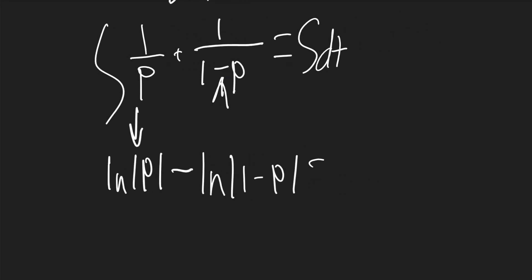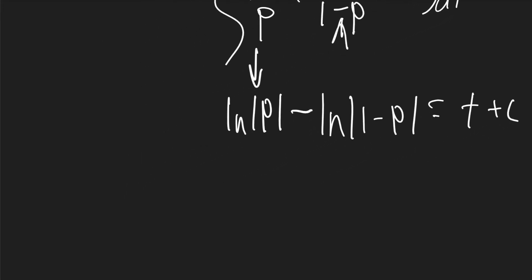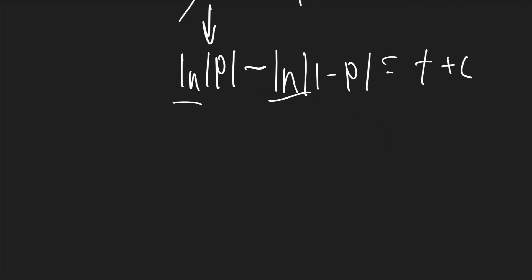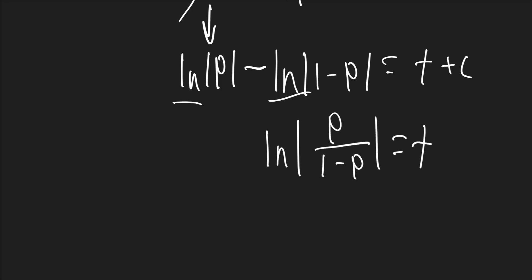This will just be equal to t + C. Now when you have two ln terms subtracting each other, you can combine them: ln of p over (1 - p) is equal to t + C.